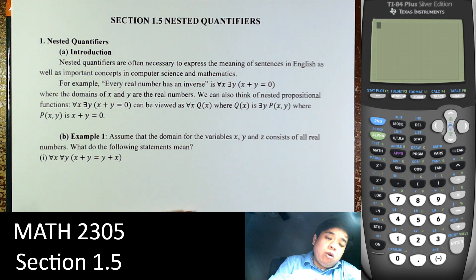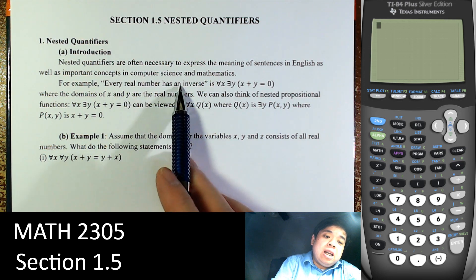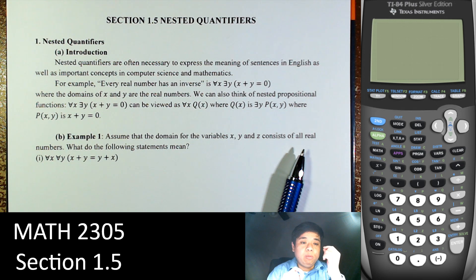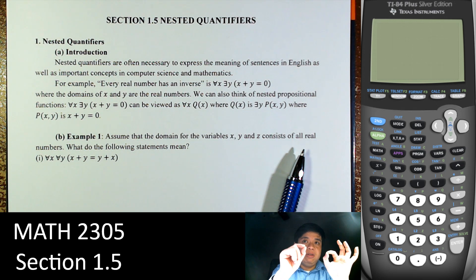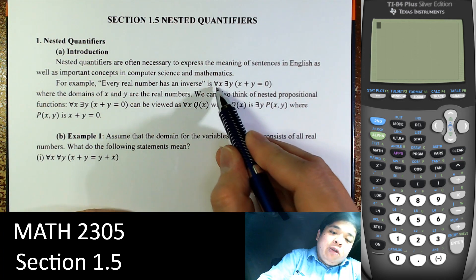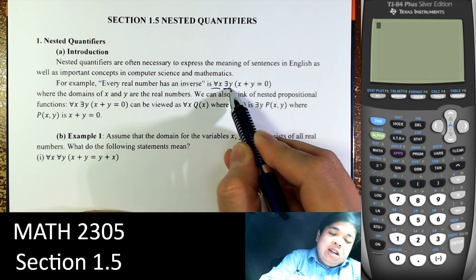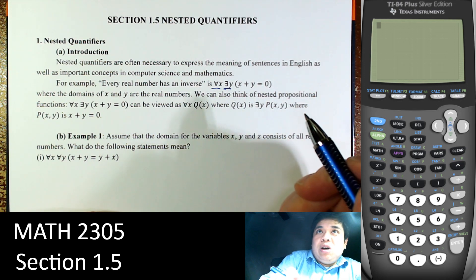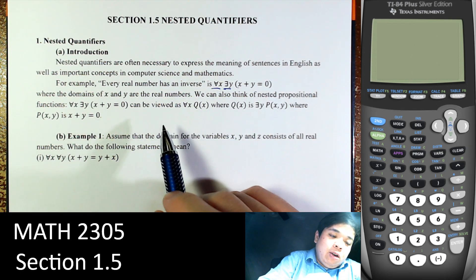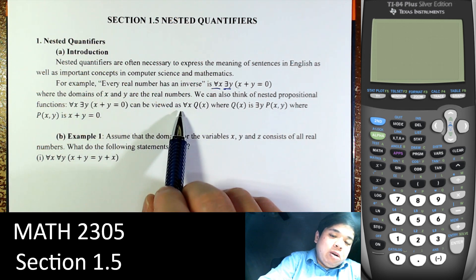For example, if we say for every real number it has an inverse. So there are two variables here — every real number, so that whatever it is, there will be an inverse. The inverse and that original number, there are two of them. So we say for every x there is an inverse, such that x plus y is equal to 0. And the domain is all real numbers.